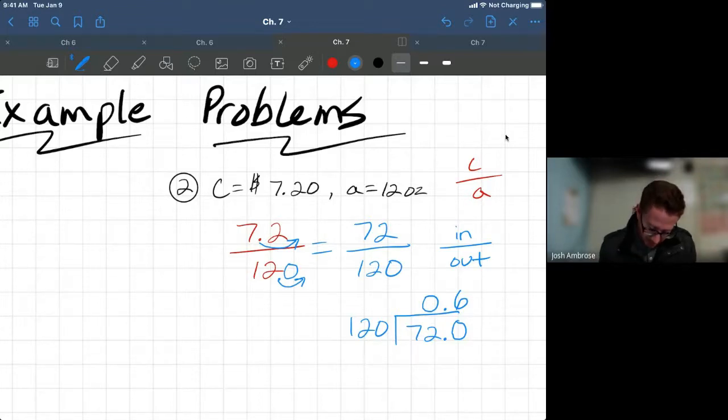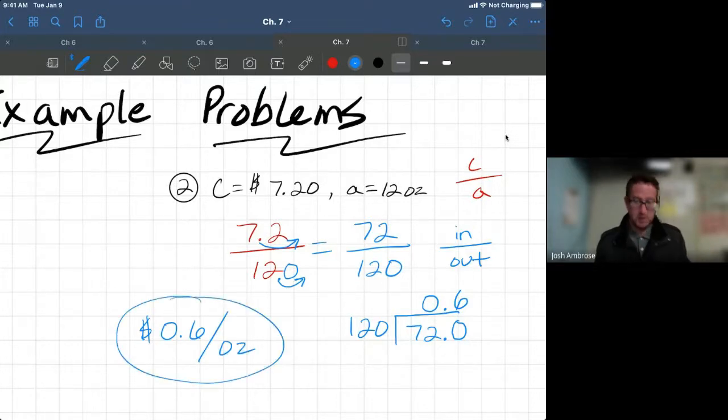But now we need to write that as a unit for unit cost. So, what are we talking about here? We're talking about 0.6 for our dollar amount per ounce. That's what you're looking at here. So, in other words, 60 cents, 0.6 of a dollar is 60 cents per ounce. That's it.